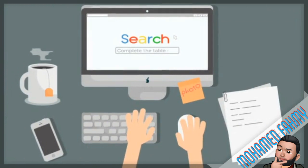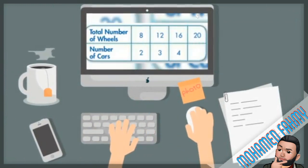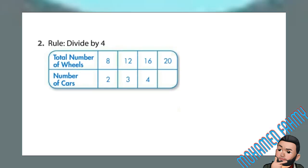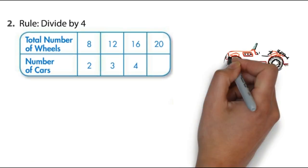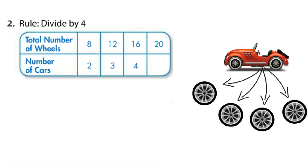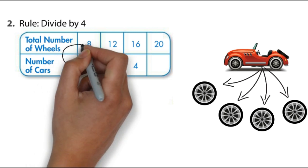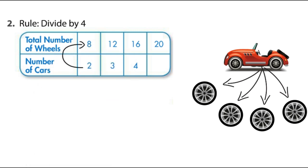The next example: we have a table. In this table we are comparing the number of wheels to the number of cars. As you know guys, the car has four wheels. So when we have two cars, we'll have eight wheels. Three cars, 12 wheels. So who can tell me what happened to two to be eight?